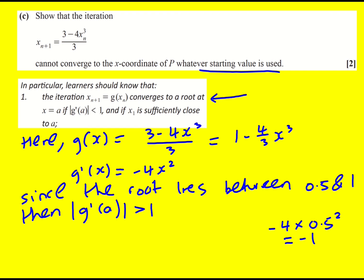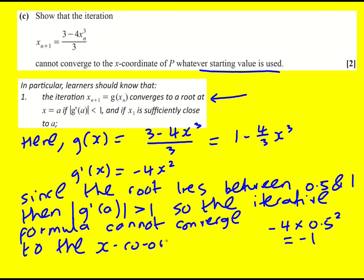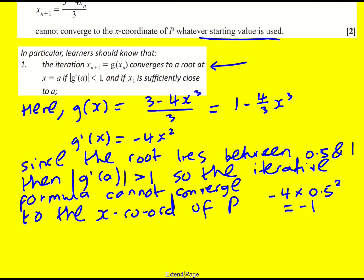And it doesn't say it here in the specification, but basically, if the iteration converges to a root if this is true, if it's not true, then it won't converge to a root. I think that's what we can take from this, even though it doesn't say that in the specification. So the iterative formula, in this case, cannot converge to the x-coordinates of P. I'm kind of taking this from the mark scheme, because they wrote it a little bit better than how I did it.